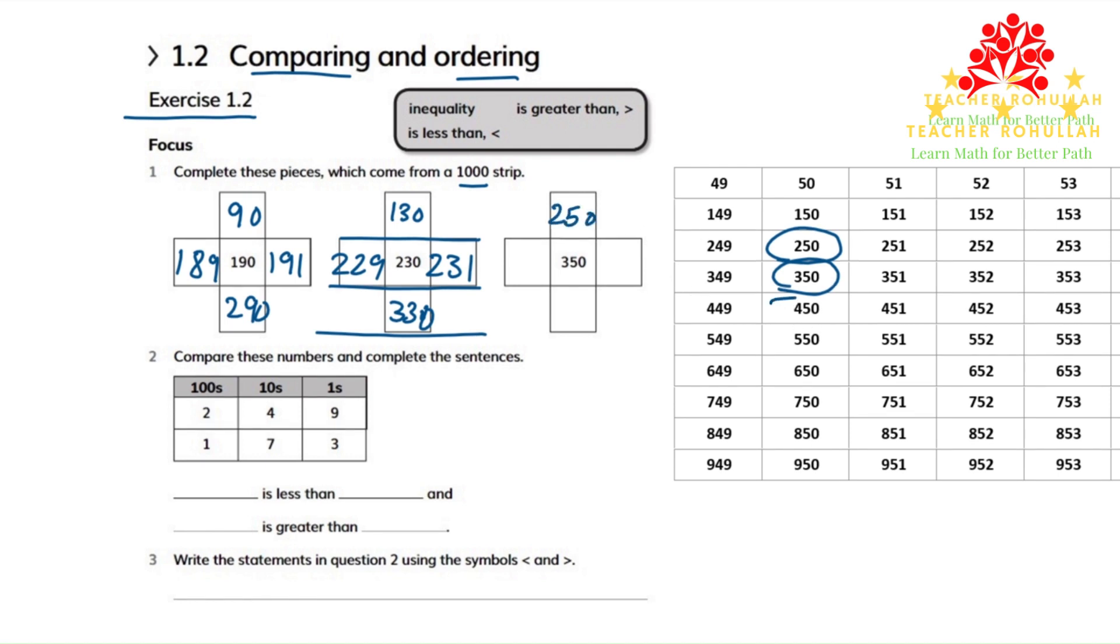And below 350 we have 450, so 450 comes here. And to the left is 349, and to the right of it is 351. This is an accurate example of the 1000 strip which is presented over here.